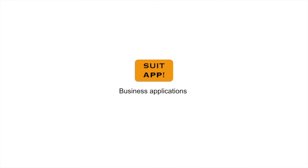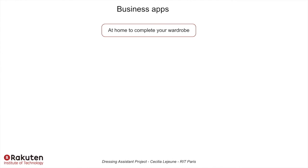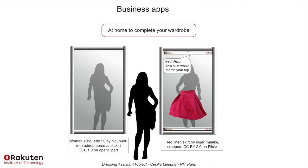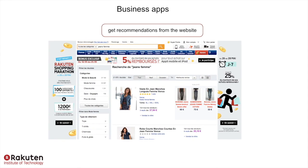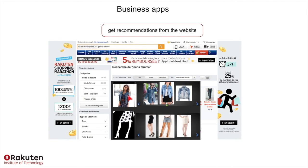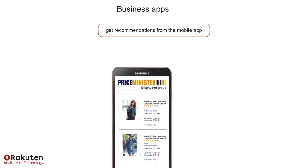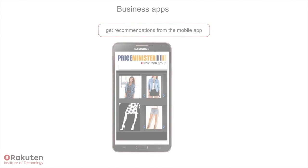And what about business applications? One idea is to provide a dressing assistant service at home to complete your wardrobe — imagine a display mirror suggesting you the best outfit of the day. You could also easily think of a retail website additional service meant to recommend products according to fashion trends. And finally, a mobile app to directly take a picture of what you see and get immediate suggestions about what you like, wherever you are.